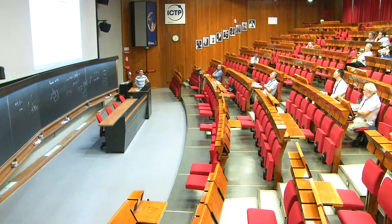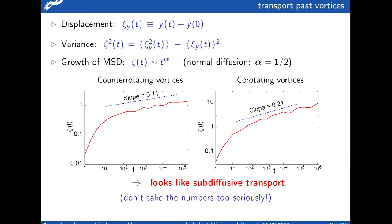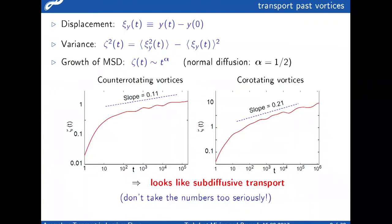Let's quantify the transport. All particles are carried along the streamlines. We take the elongation of the package of the ensemble and introduce mean squared deviation. For counter-rotating vortices, it grows reasonably slow. Here it goes faster. In both cases, the slope is definitely lower than 0.5, so it is what we would call subdiffusion. Don't pay much attention to those numbers; we will see later they should be different.